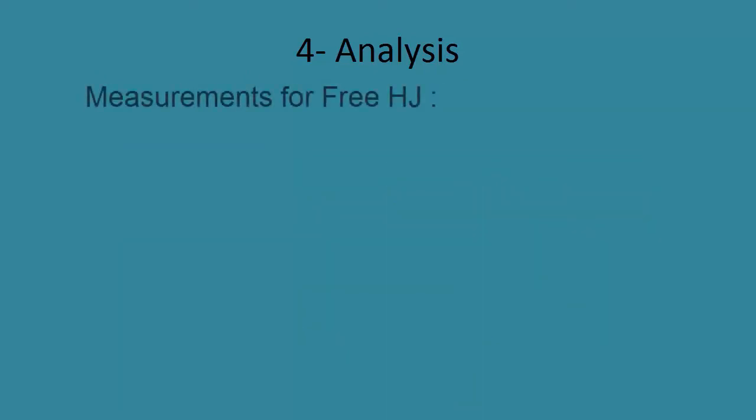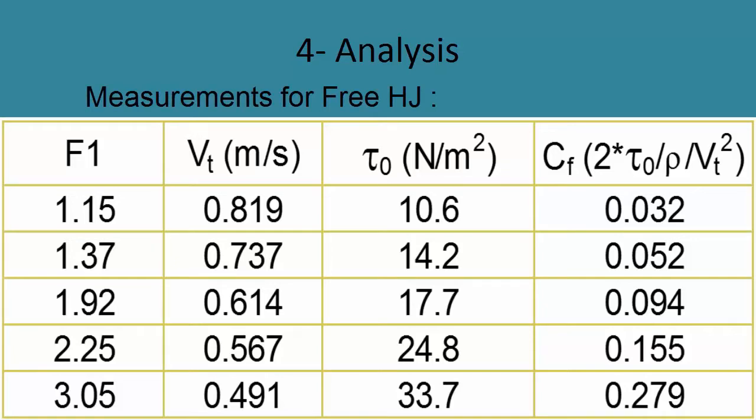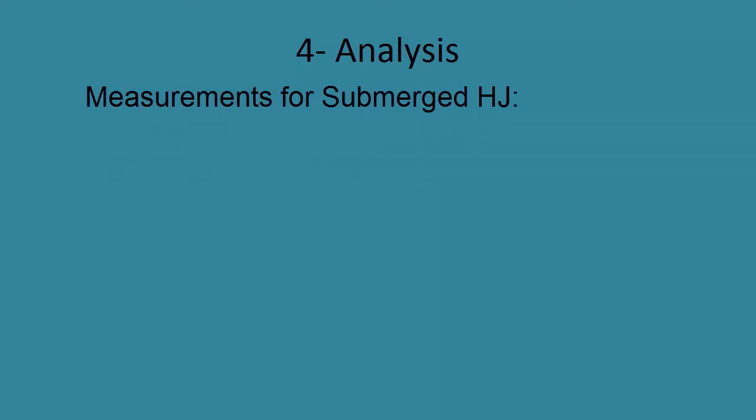For free hydraulic jump, measurements were: Froude number ranges from 1 to 3, tail velocity ranges from 0.82 to 0.49 meters per second, tau ranges from 10.6 to 33.7 Newtons per square meter. So skin friction coefficient was calculated and ranges from 0.03 to 0.28.